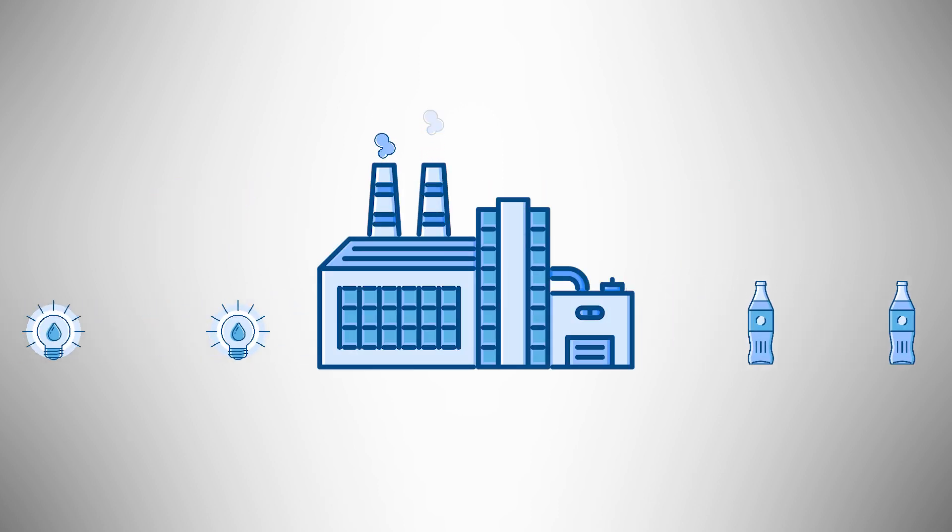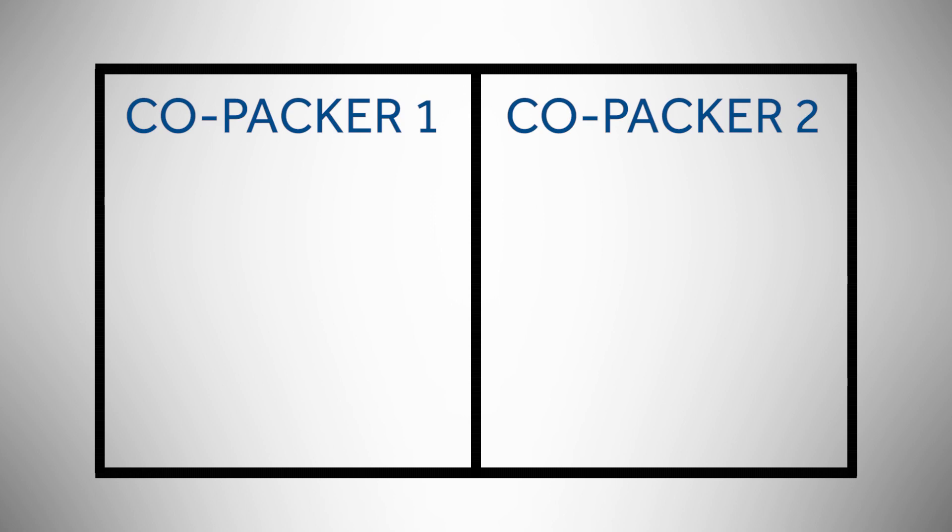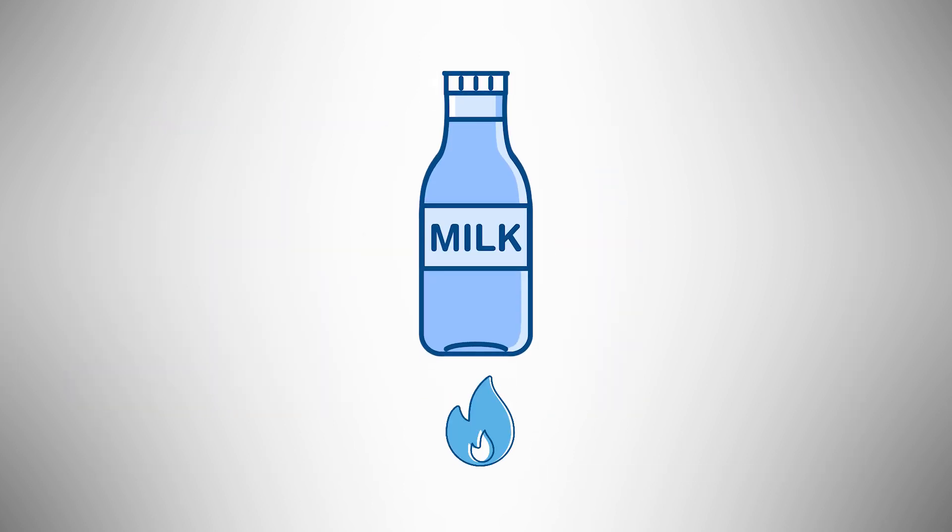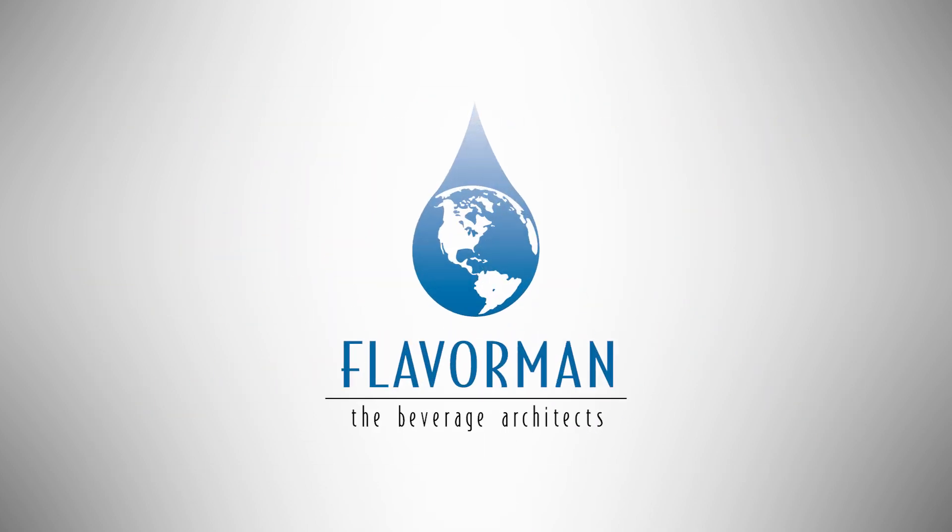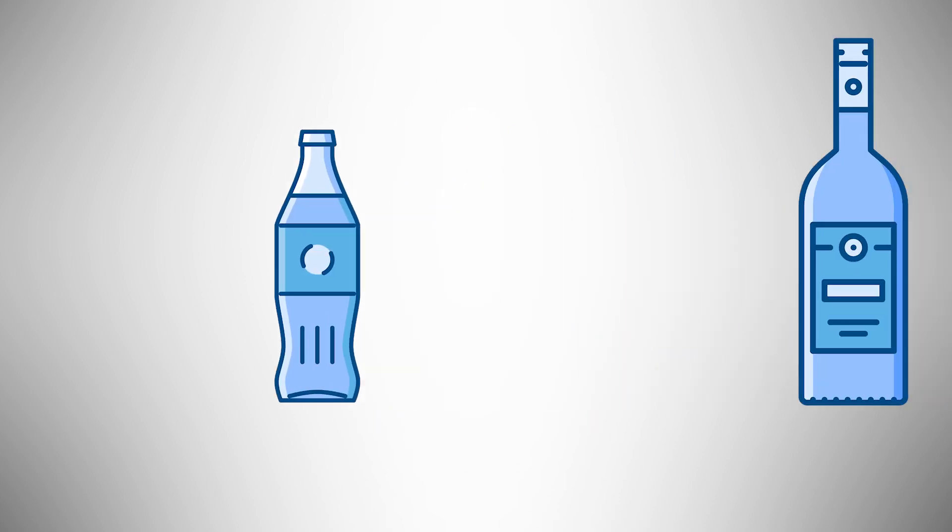You have to know what to expect from a co-packer. Different co-packers have different capabilities. Some can pasteurize, some can't. Some bottle glass, some only do cans. For example, if you have a dairy product, it will need to be pasteurized for safety, so the co-packer for your product needs to have that capability. Your beverage development partner should provide this information for you.